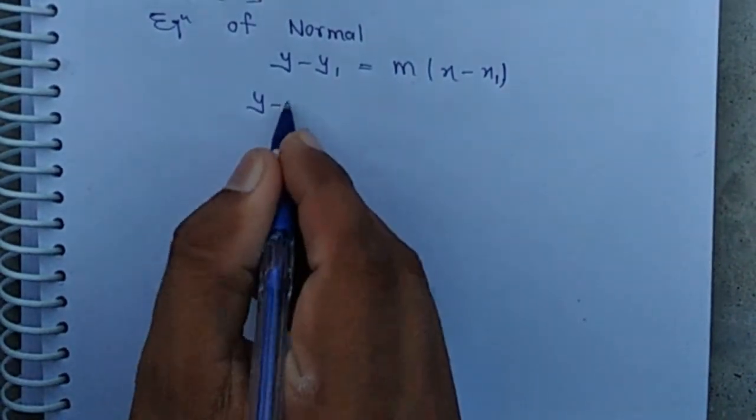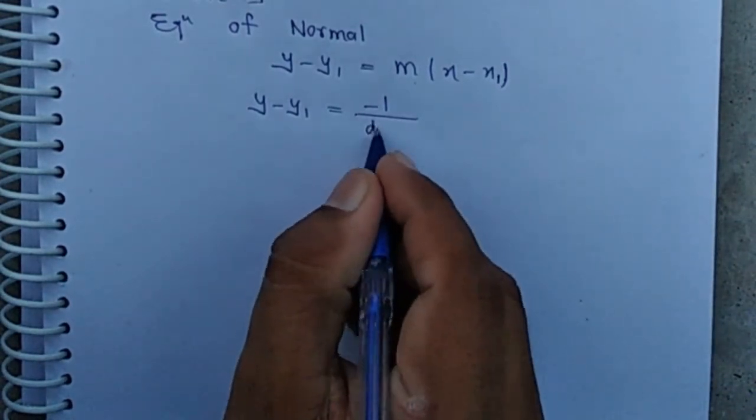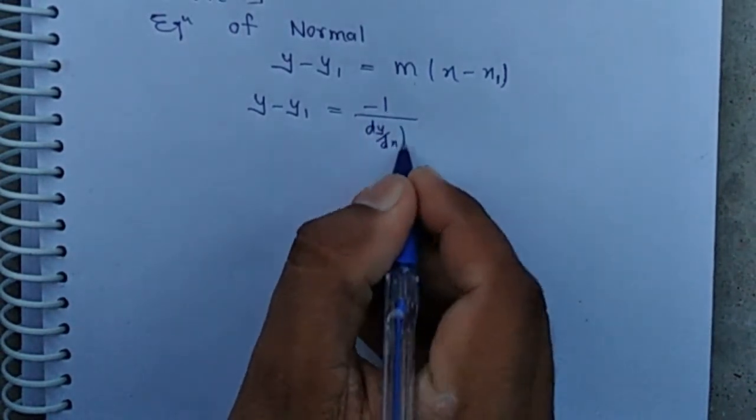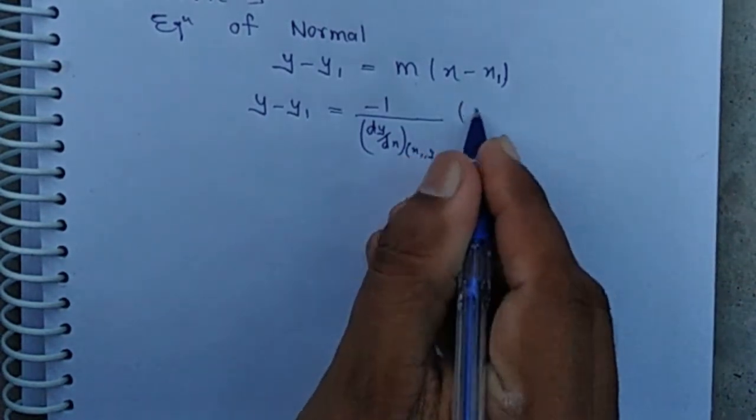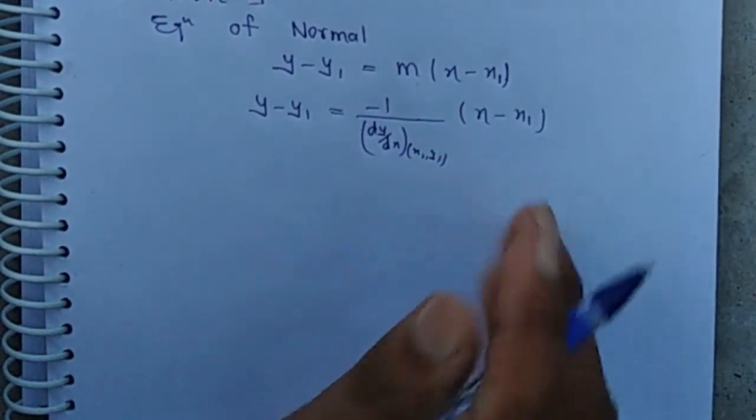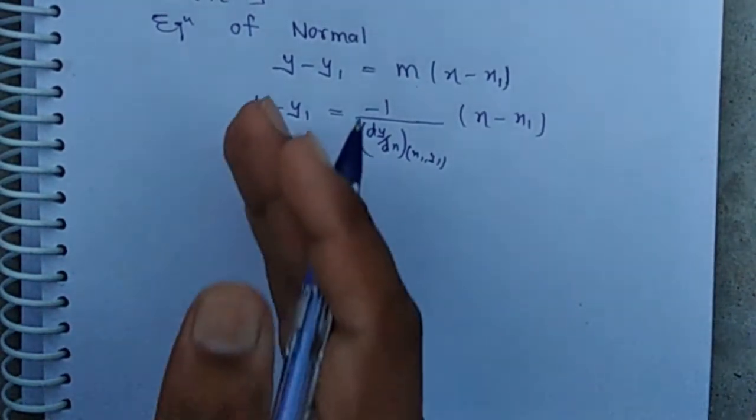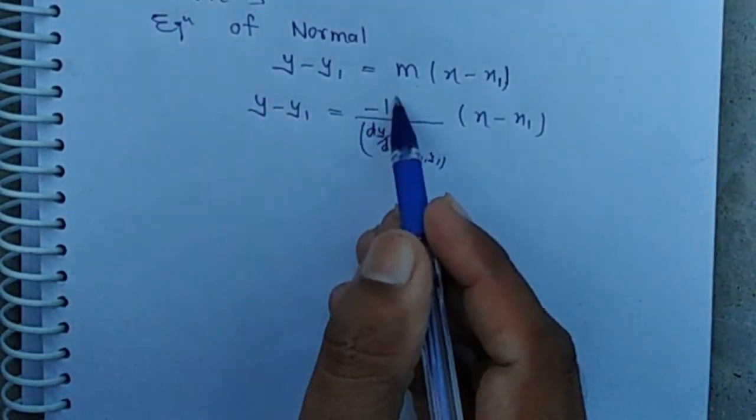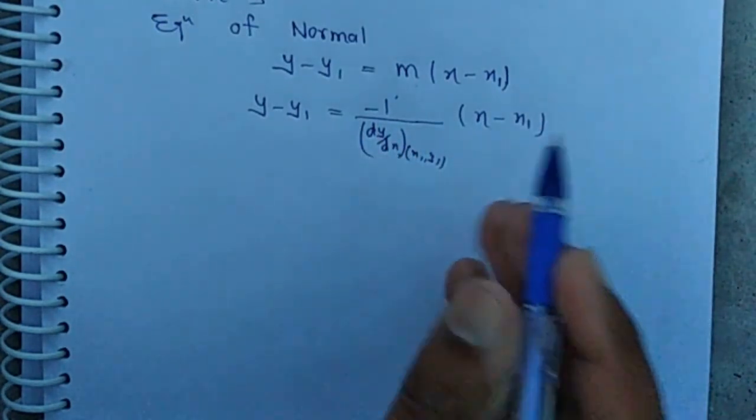And slope of normal is y minus y1 equals minus 1 by dy/dx at point x1 comma y1 times x minus x1. Means equation of normal is given by y minus y1 equal minus 1 upon slope of tangent into x minus x1.